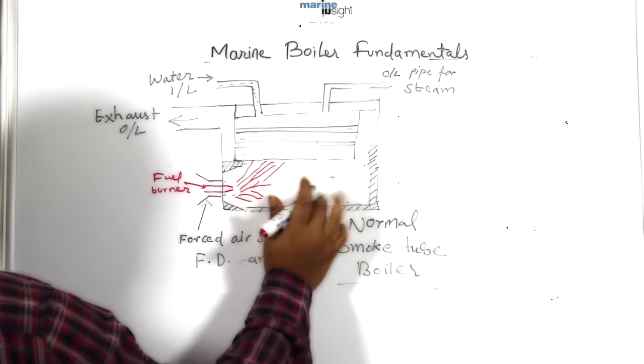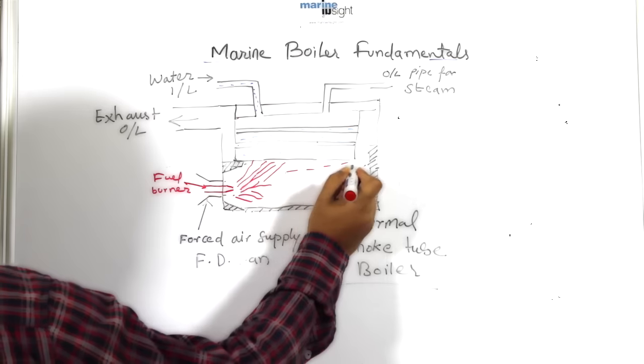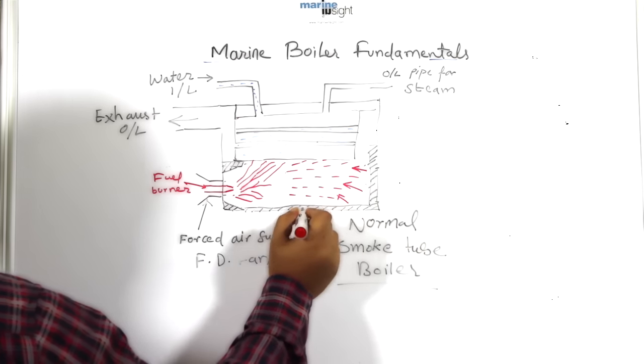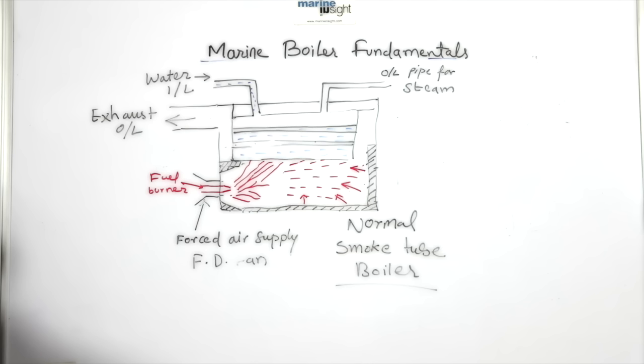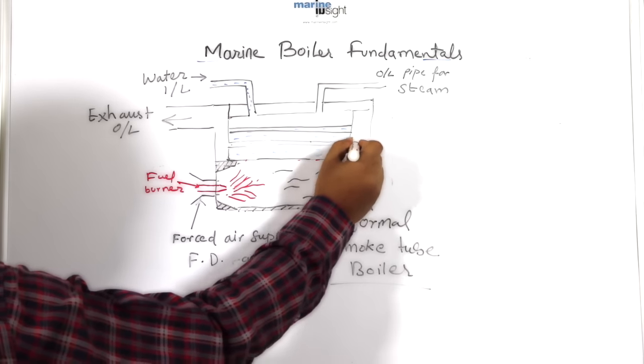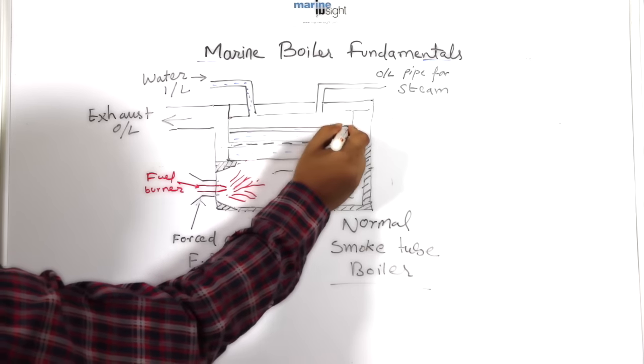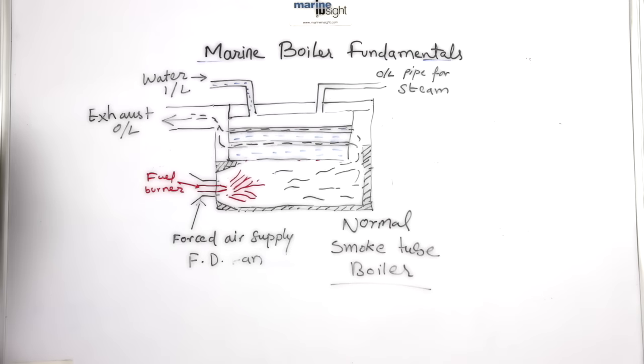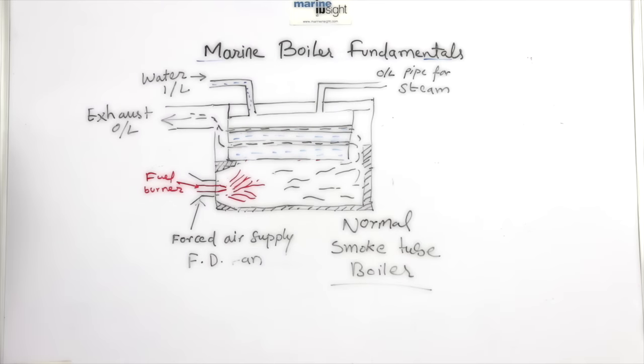The hot electromagnetic waves from the burner travel forward in the furnace and heat up the drum by radiation process. The refractory helps in directing these electromagnetic waves and also contains the heat inside the furnace to avoid heat loss. The burner flame also produces hot combustion gases which travel inside the furnace and pass through the smoke tubes. These hot gases heat up the boundary of the smoke tube and then the surrounding water by process of conduction.